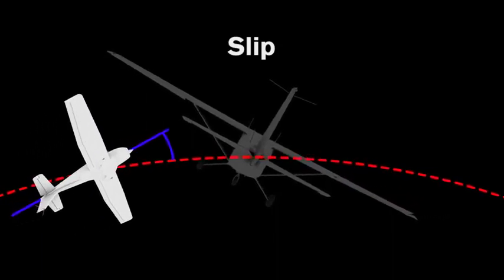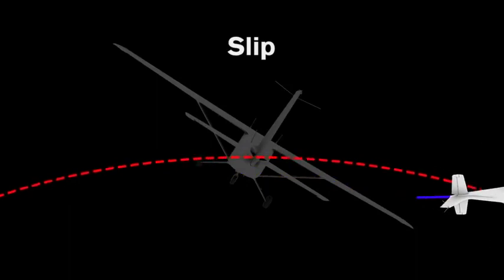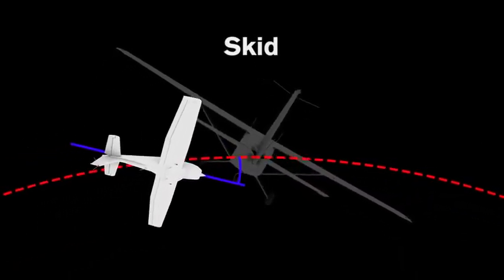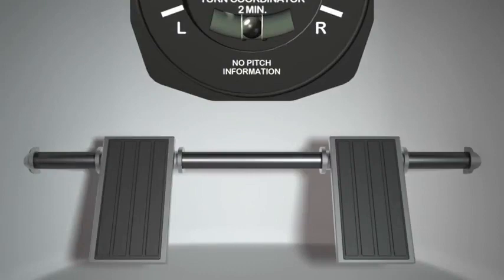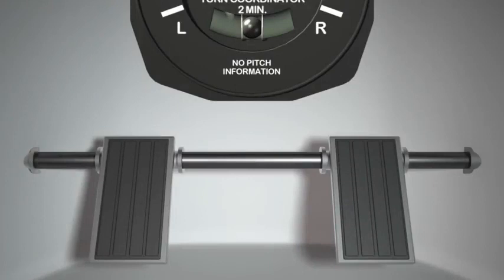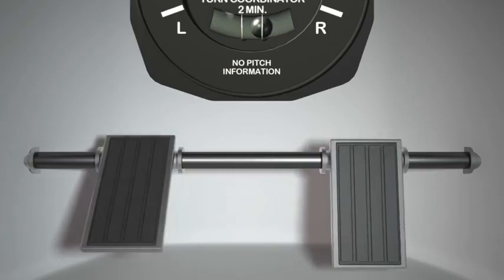In a slip, there is not a great enough rate of turn for the amount of bank. The pilot needs to add more rudder and or reduce the bank. In a skid, there is too much of a rate of turn for the amount of bank. The pilot needs to add more bank and or reduce the amount of rudder. The easiest way to remember how to fix the situation is just to step on the ball. This means that when the ball is deflected off center, step on the respective rudder pedal that the ball is deflected toward. A ball deflected left means step on the left rudder. Conversely, a ball deflected right means step on the right rudder.